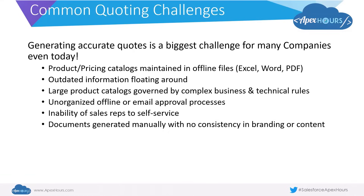When some companies have a large product catalog with complex business and technical rules to be followed, they either use a homegrown solution or an Excel file with extensive macros. Not everyone knows how to deal with those macros, and imagine if the person who built it is no longer at the company and that knowledge gets lost. Some companies also do not have ways to formally request or track approvals — it could entail emailing for approval or walking to someone's desk, which is difficult to track or report on. All these slow down deals.